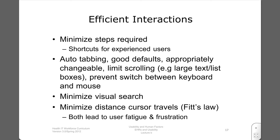Efficient interactions minimize the number of steps required to do specific tasks and allow shortcuts for experienced users. One can use features such as auto-tabbing, make sure to use good default values typical of most situations, and strike a balance between automated functions and allowing the user to edit or change. Other considerations are to prevent excessive switching between keyboard and mouse, to minimize visual search by organizing material in a logical manner and consistent locations, and to minimize the distance the cursor must travel repeatedly.